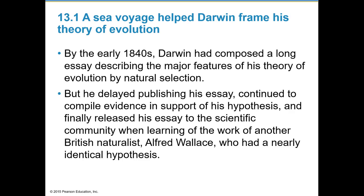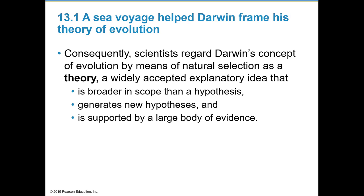By the early 1840s, Darwin had composed a long essay describing the major features of his theory of evolution by natural selection, but he didn't publish it yet and continued to compile more evidence. He finally released his essay when he learned about the work of British naturalist Alfred Wallace, who had a nearly identical hypothesis. Scientists regard Darwin's concept as a theory — a widely accepted explanatory idea broader in scope than a hypothesis, supported by a large body of evidence.